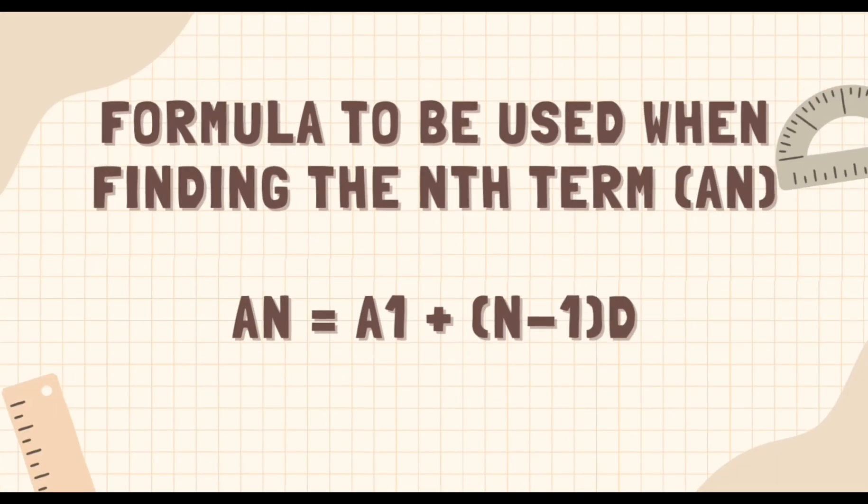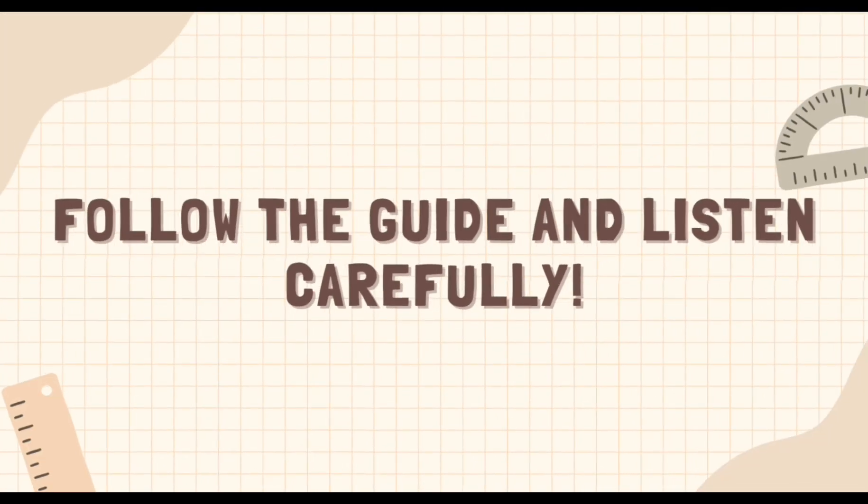Next ay ang formula na gagamitin natin sa paghahanap ng n-th term or a sub n. So, here's the formula. A sub n is equals to a sub 1 plus the quantity of n minus 1 multiplied by d or the common difference.